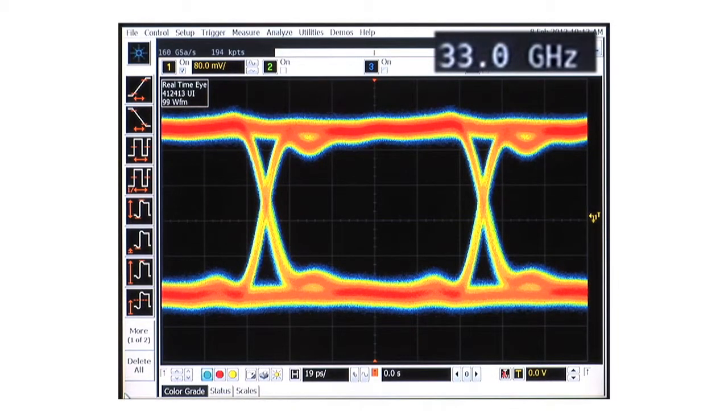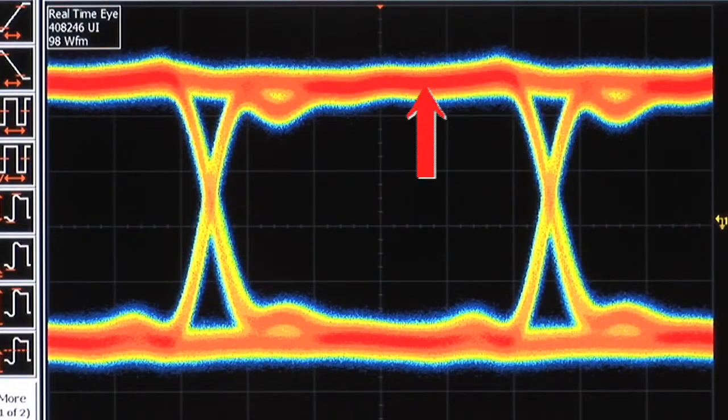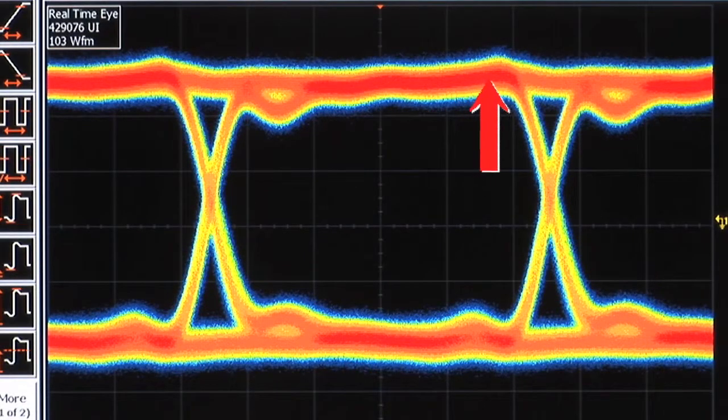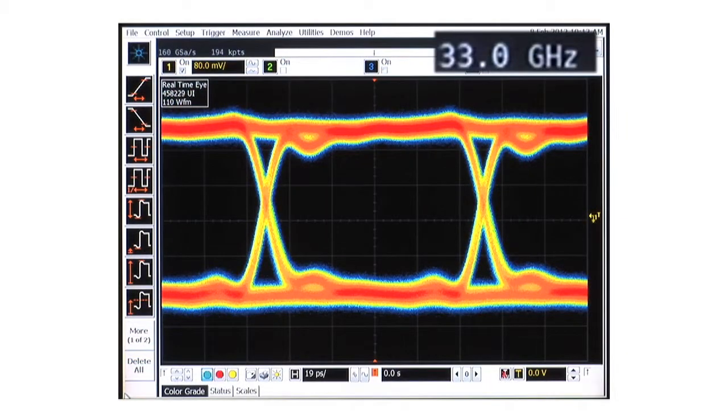At 33 GHz, the shape of the signal is now clear. However, there is still some ringing as even at 33 GHz, there's not enough oscilloscope bandwidth to capture this signal.